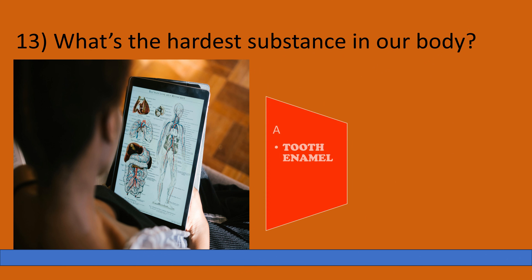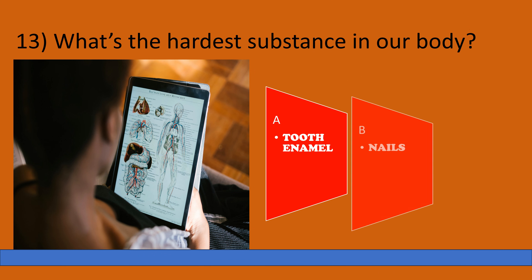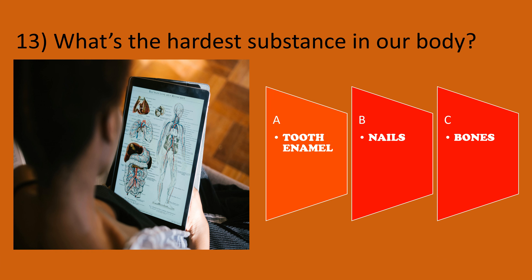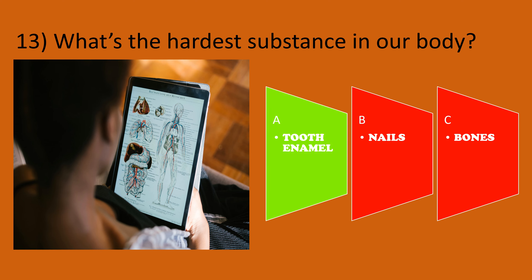What is the hardest substance in our body? A: Tooth Enamel, B: Nails, C: Bones. The correct option is A, Tooth Enamel.